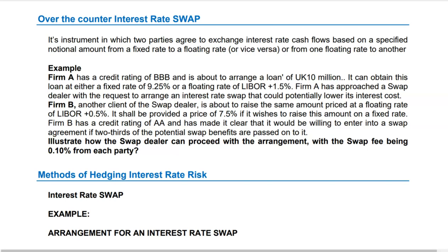Firm A has a credit rating of BBB and is about to arrange a loan of £10 million. It can obtain this loan at either a fixed rate of 9.25% or a floating rate of LIBOR plus 1.5%. In the exam, the examiner will not specify the preference of the party — you have to decide which rate the company should borrow at, either floating or fixed.